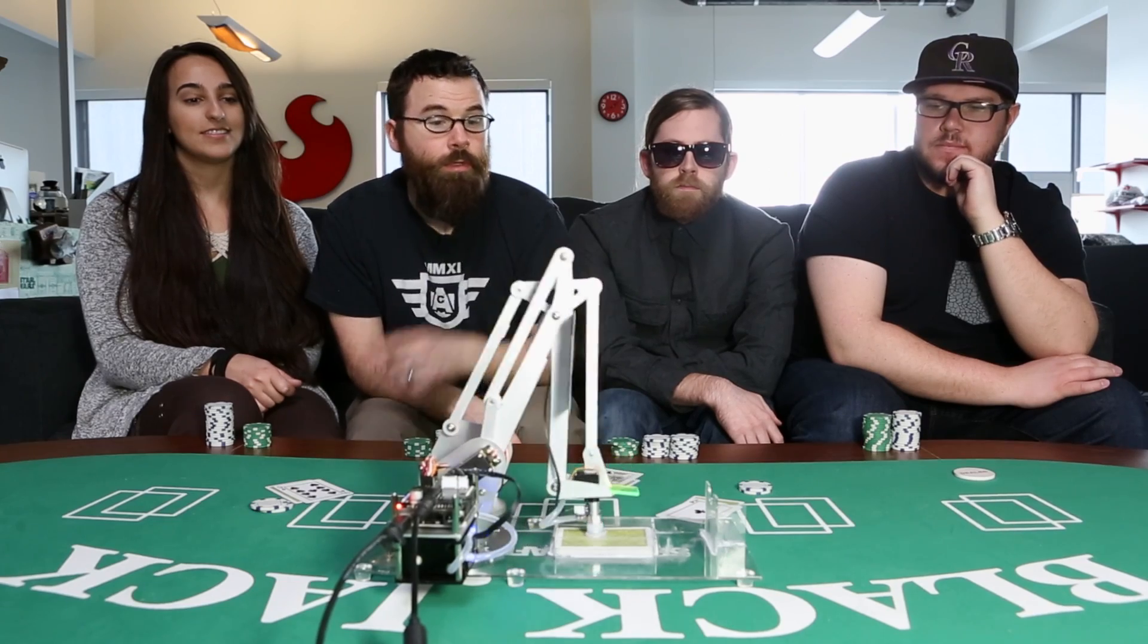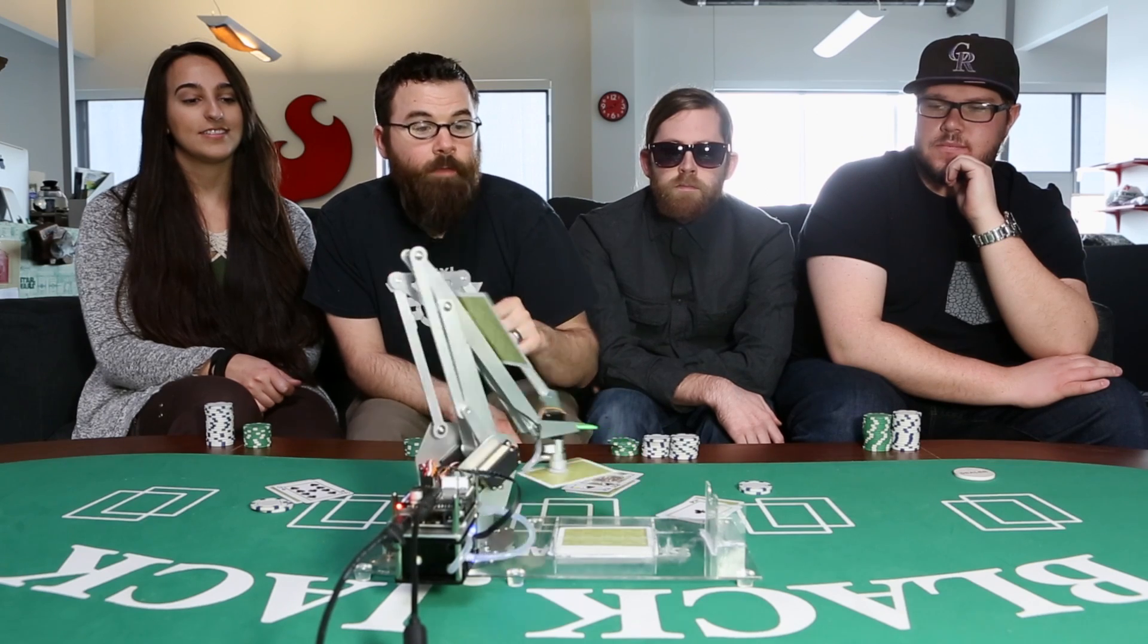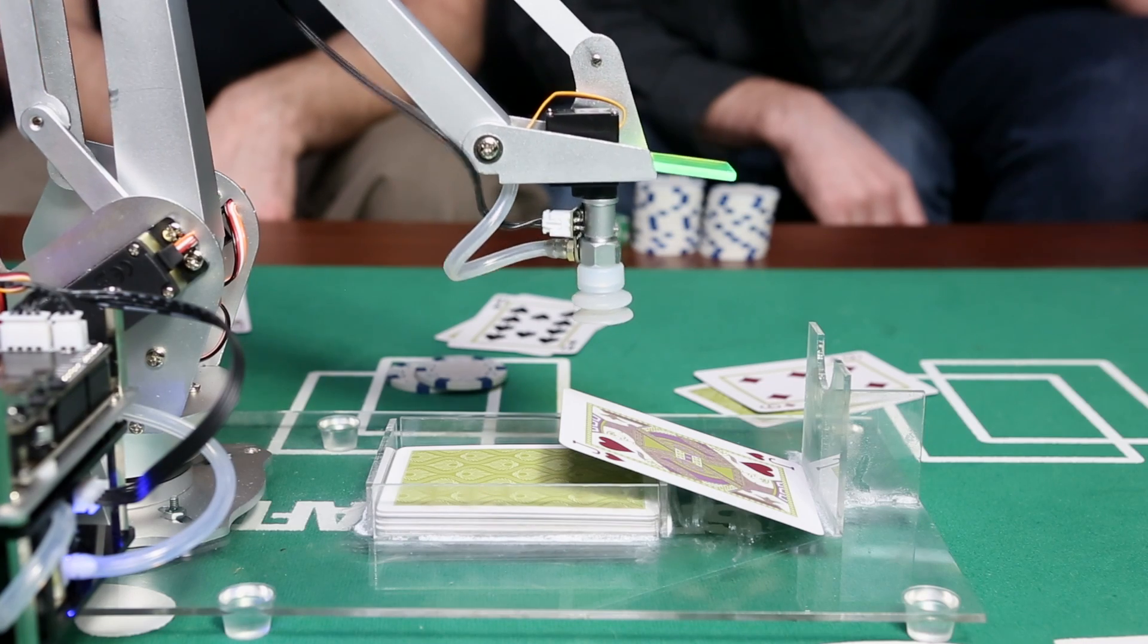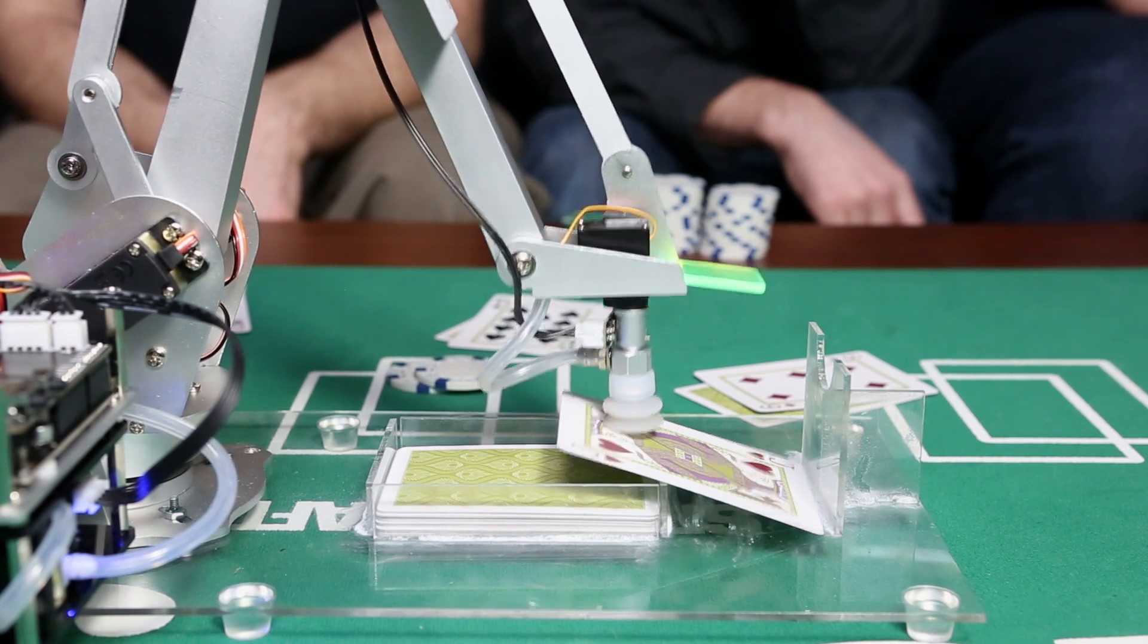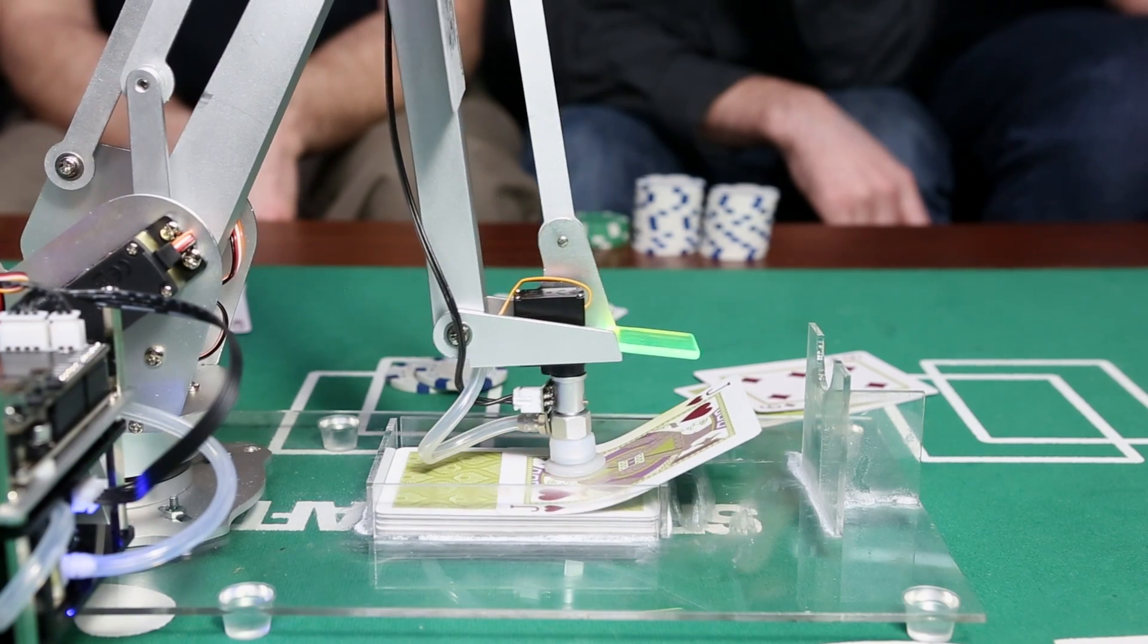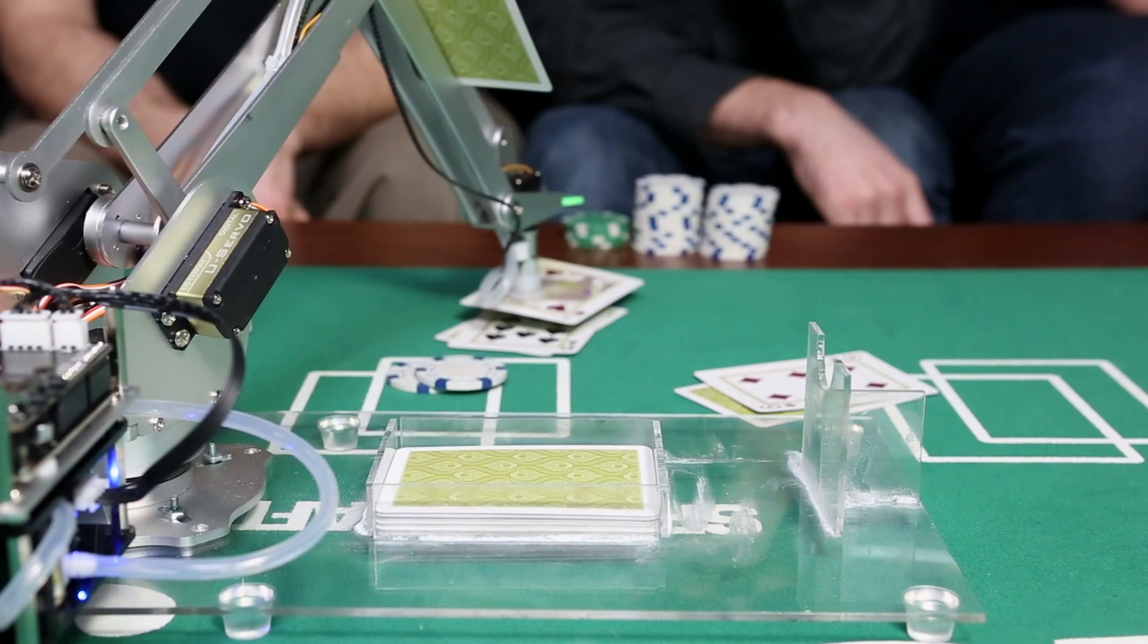In addition to the vacuum pump as well as the servo, it has a switch in the end of this which can determine if it's reached the end of its limit, essentially telling it how far down it's pressed.